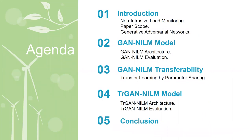My agenda for this presentation is to start with introducing the scope of this paper and discussing a GAN-NILM model, showing how we use Generative Adversarial Networks to solve the non-intrusive load monitoring problem. Then I show how we apply transfer learning to GAN-NILM to achieve some level of model generalizability. Next, I will illustrate a second model, TR-GAN-NILM, which achieved more robust generalizability. Lastly, I will give a conclusion and some future work suggestions.